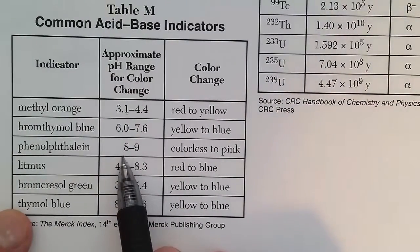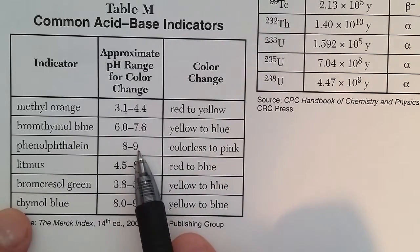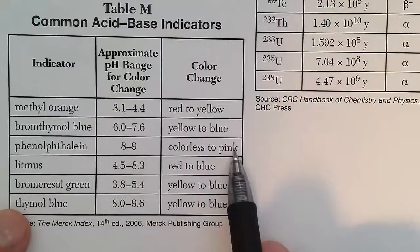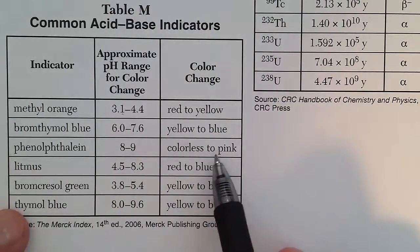Phenolphthalein, if the pH is 8 or less, it will be colorless. If it's 9 or more, it will turn pink. In between, it will be varying shades of a very light pink.